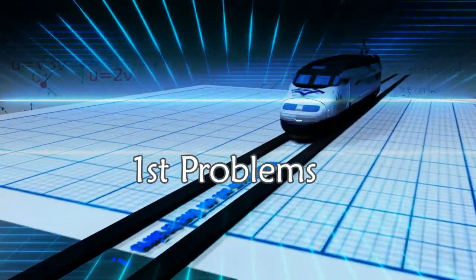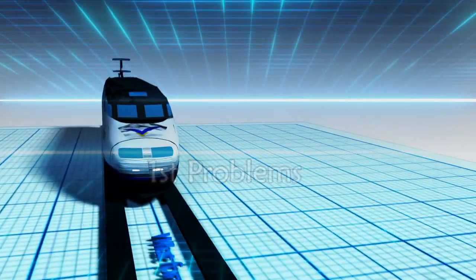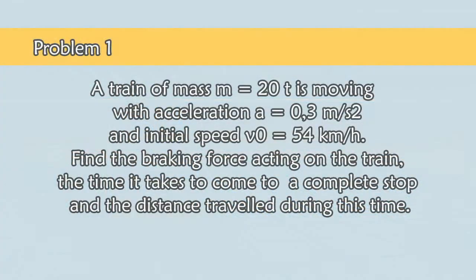Let's solve some problems. Problem 1: A train of mass 20 tons is moving with acceleration A and has initial speed V0 which is equal to 54 kilometers per hour.